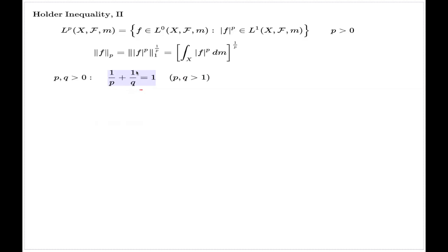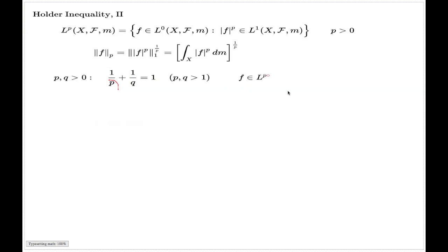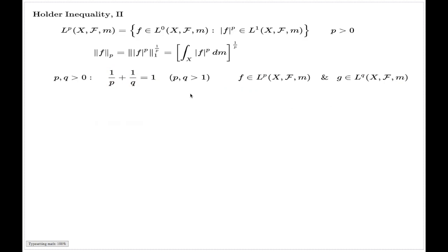We now choose two positive numbers p and q such that they are connected by this relation: 1/p + 1/q = 1. If you have two positive numbers connected by this relation, they will inevitably both be bigger than 1. Because q positive means this fraction is positive, which means this fraction must be less than 1, so the denominator must be larger than 1.